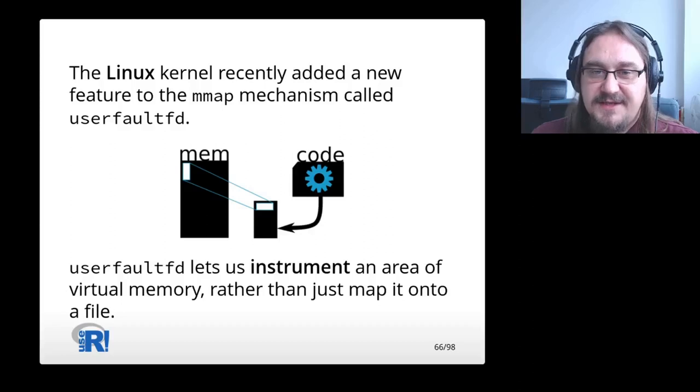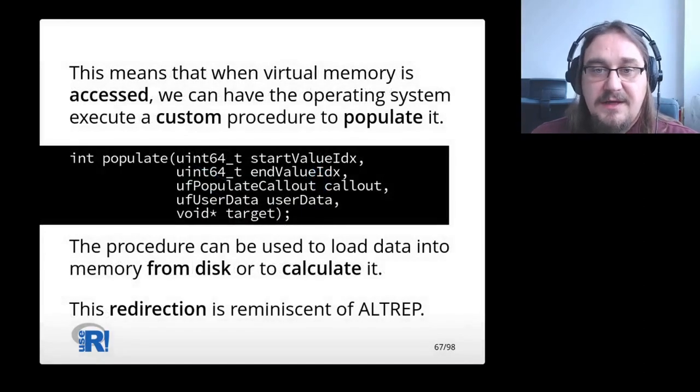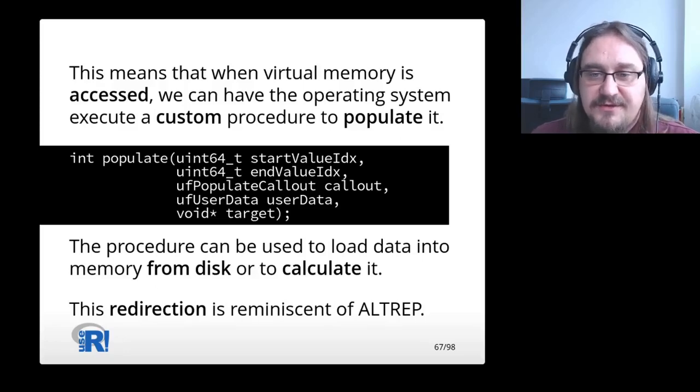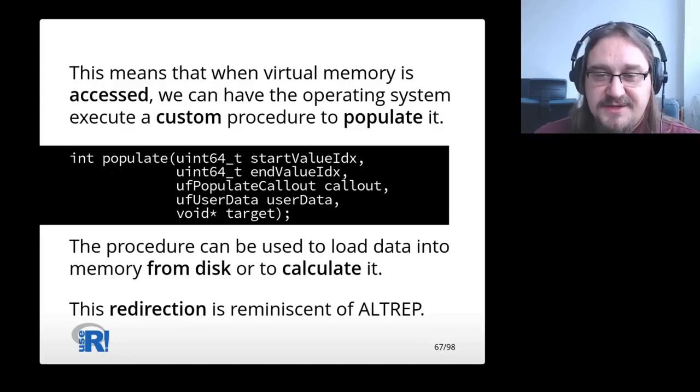The Linux kernel recently added a new feature to the mmap mechanism called UserFaultFD. UserFaultFD lets us instrument an area of virtual memory rather than just map it onto a file. This means that when virtual memory is accessed, we can have the operating system execute a custom procedure to populate it. The procedure can be used to load data into memory from disk or to calculate it. This redirection is reminiscent of Altrep.